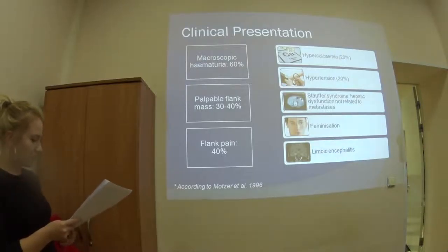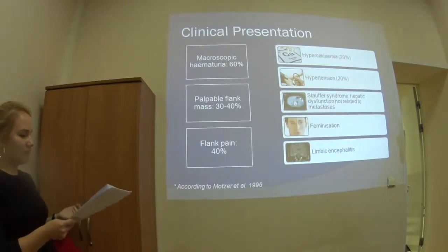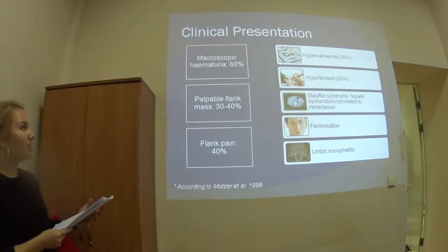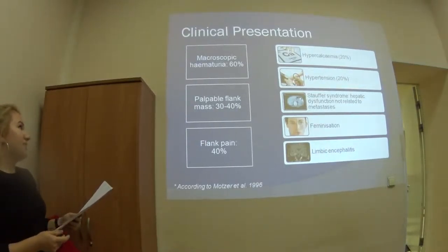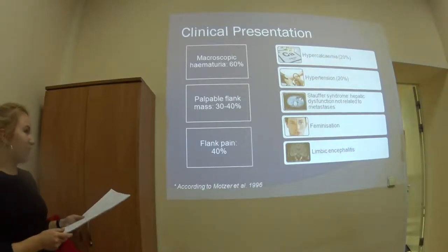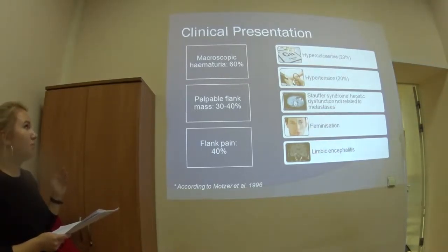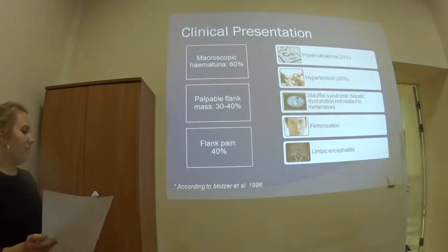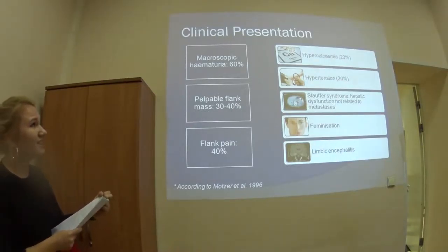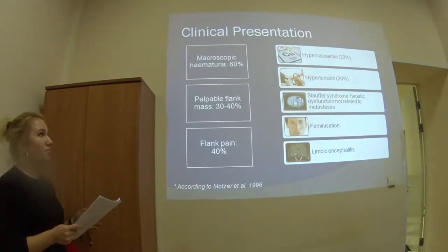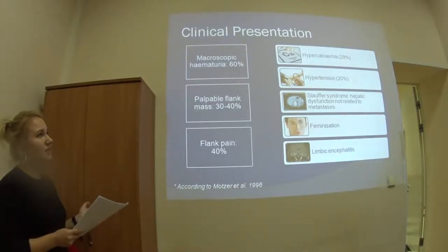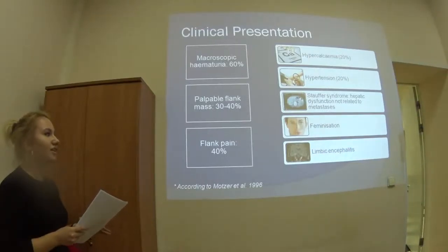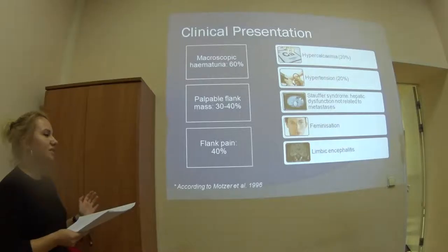What about clinical presentations? Because of often non-specific clinical manifestations, renal cell carcinoma is usually referred to as the 'great imitator' by clinicians. Presentation is classically described as the triad of macroscopic hematuria, palpable flank mass, and flank pain. Around 25% of renal cell carcinoma patients will develop paraneoplastic syndrome, which includes hypercalcemia, hypertension, Stauffer syndrome, hepatic dysfunction not related to metastasis, and sometimes feminization or limbic encephalitis.